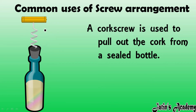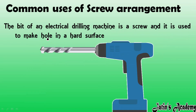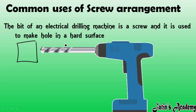The bit of an electrical drilling machine is also a screw. In a drilling machine, a screw arrangement is used to make a hole in a hard surface. When we apply force from outside, the drill moves inside into the wall or hard surface, making a hole.